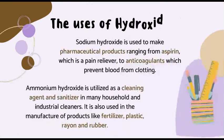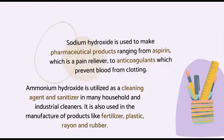What are the uses of hydroxides? Sodium hydroxide is used to make pharmaceutical products, ranging from aspirin, which is a pain reliever, to anticoagulants, which are used to prevent blood from clotting. Ammonium hydroxide is utilized as a cleaning agent and sanitizer in many households and industrial cleaners. It is also used in the manufacture of products like fertilizer, plastic, rayon, and rubber.